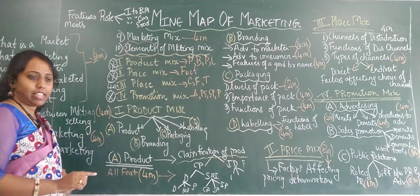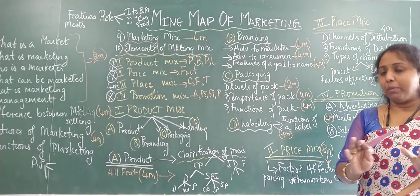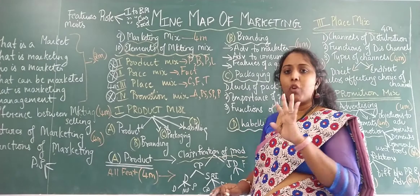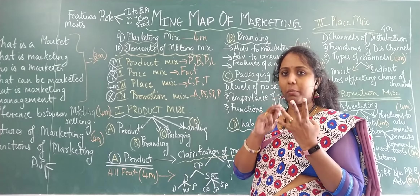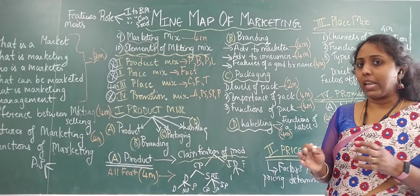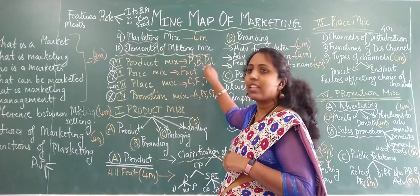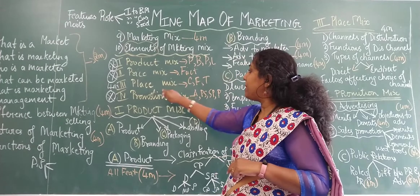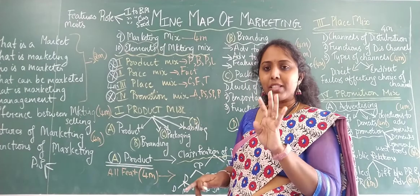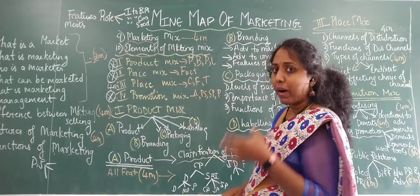So this is the mind map of the chapter. Again, if they ask you to explain marketing mix for four marks, just give them product, price, place, and promotion. But if they ask you to explain the elements of marketing mix, you need to write generally about product mix, price mix, place mix, and promotion mix — just write the four for four marks, don't write all the subdivisions.